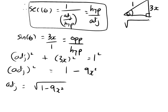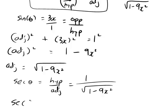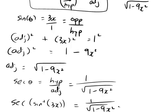Now we're ready. We want sec theta, which equals hypotenuse over adjacent. Reading off our triangle, that's 1 divided by √(1 − 9x²). So sec of inverse sine 3x equals 1 over √(1 − 9x²). This is also reasonable because, since inverse sine takes values in the first and fourth quadrant, sec is always positive, which agrees with this being a positive expression.